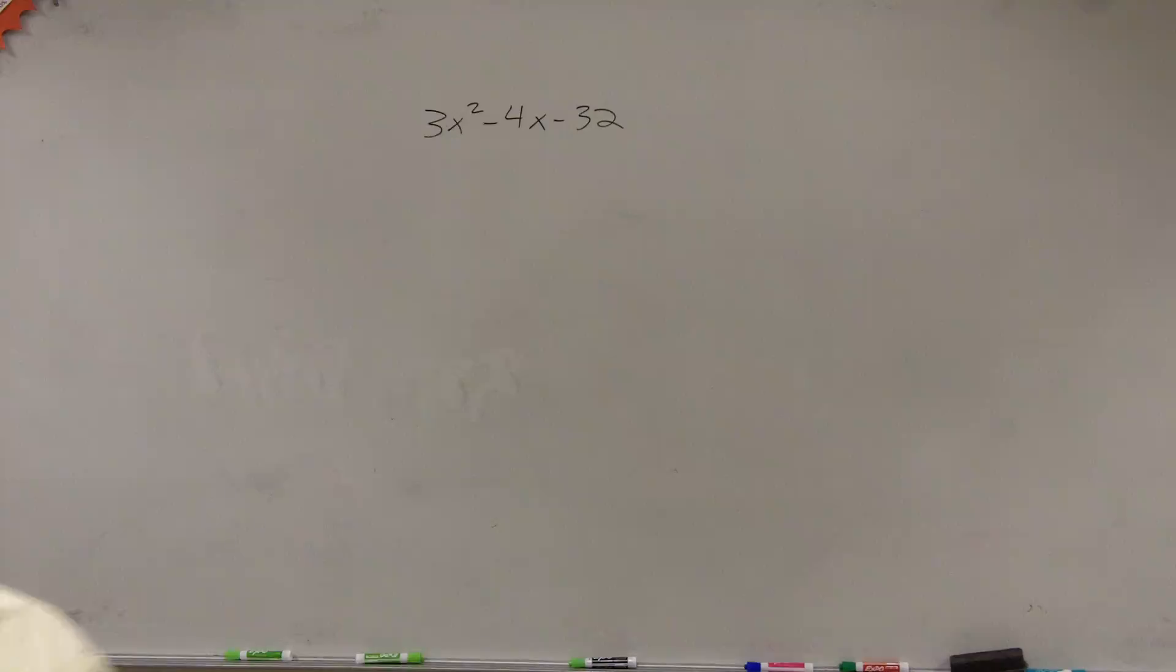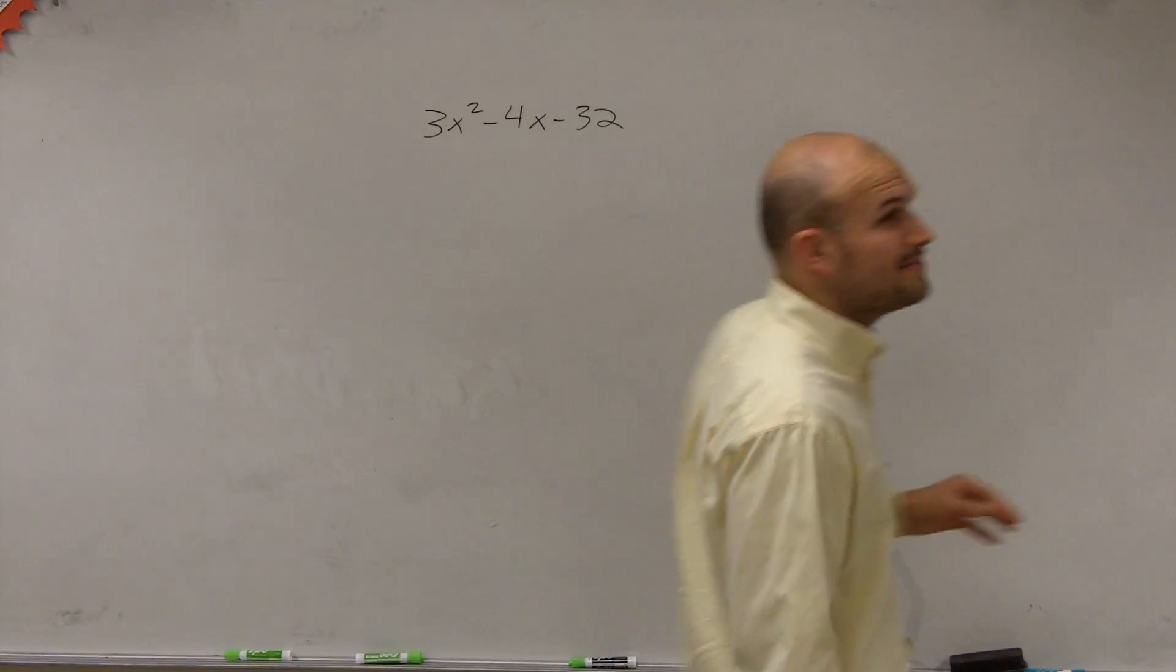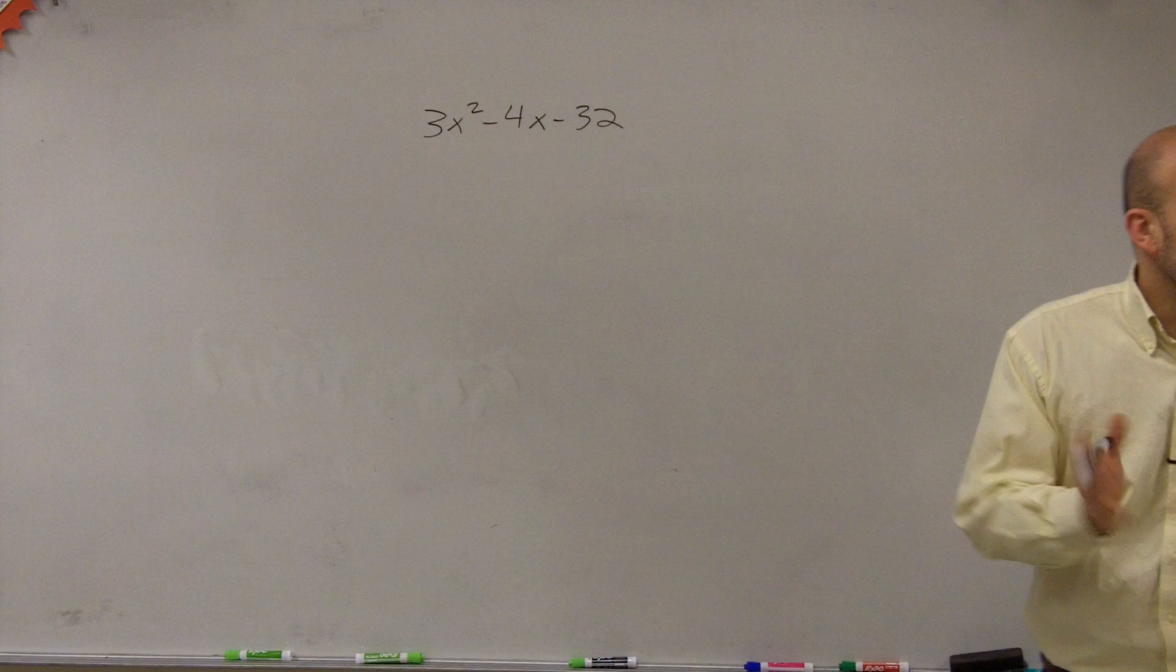So let's go through it. All right. So we have 3x squared minus 4x minus 32.